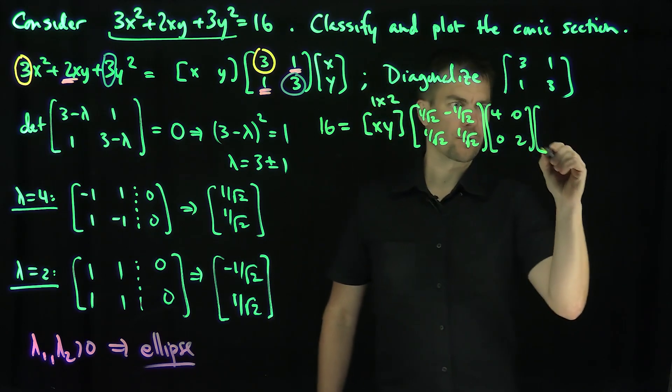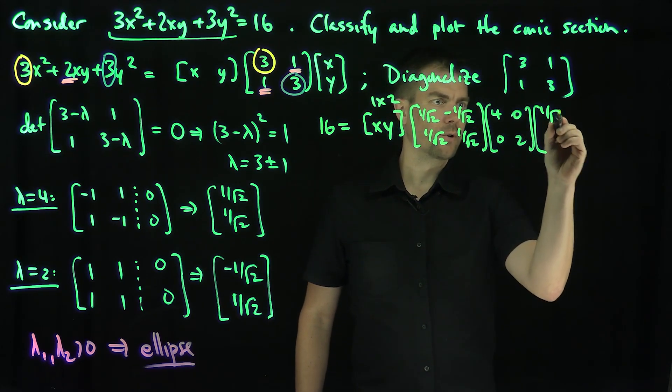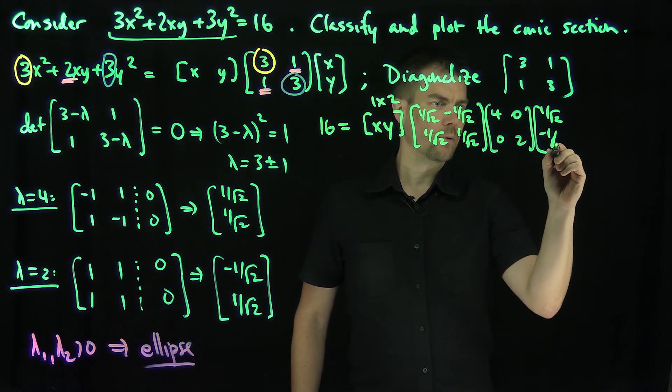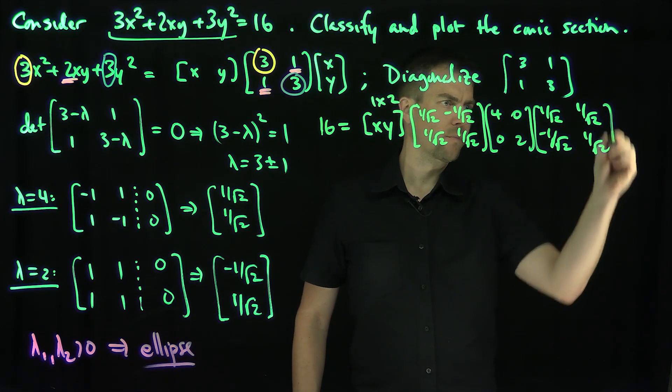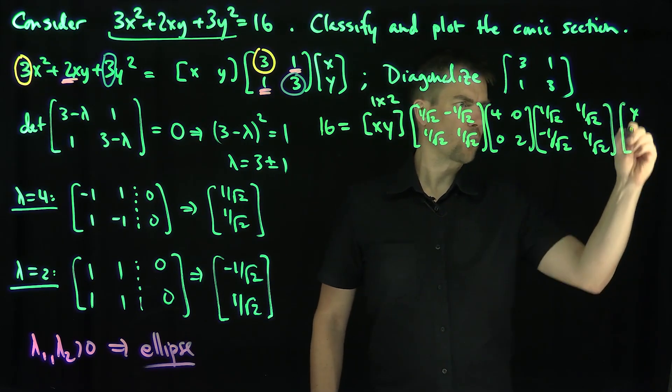And then we're going to have the inverse of this matrix, which is going to be the transpose. So [1/√2, -1/√2; 1/√2, 1/√2], and then the vector xy.